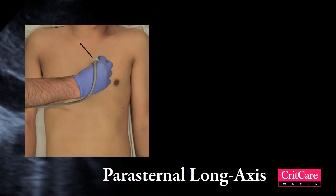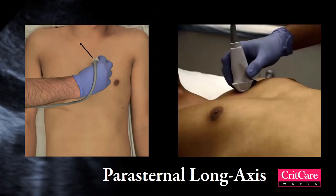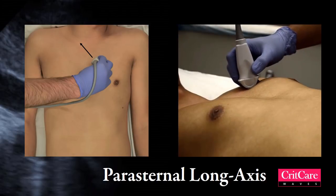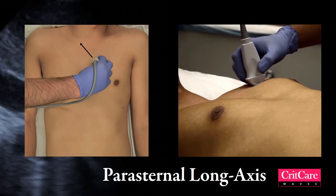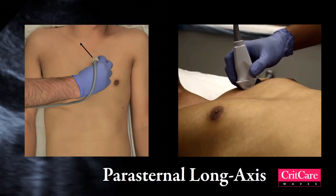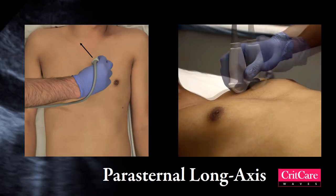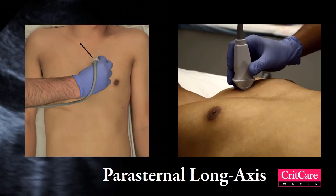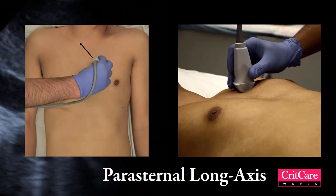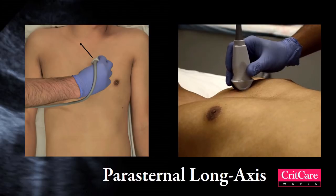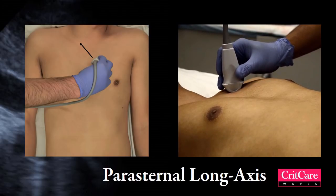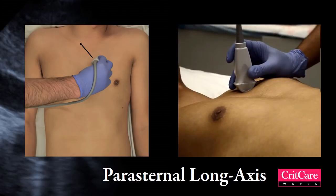Start off by scanning the intercostal space, moving laterally until you see something move at the frequency of the heart rate. If you are not getting a view, sweep the probe to an intercostal space above or below and scan that intercostal space similarly. Once you see the moving heart partially, use very fine rocking and fanning movements to improve the image.